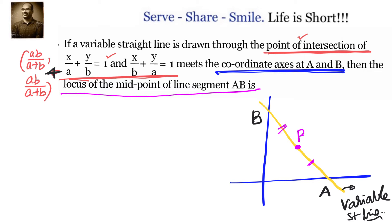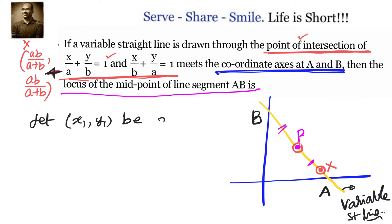Let point P with coordinates (x₁, y₁) be a point on the locus. That means, for the curve formed by joining midpoints of all line segments AB for different straight lines passing through (ab/(a+b), ab/(a+b)), P is one such point. So let P(x₁, y₁) be the midpoint of AB.